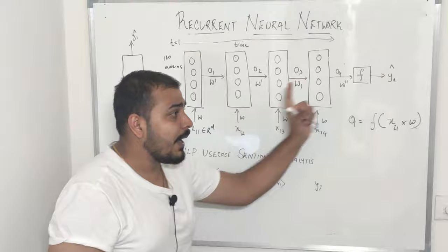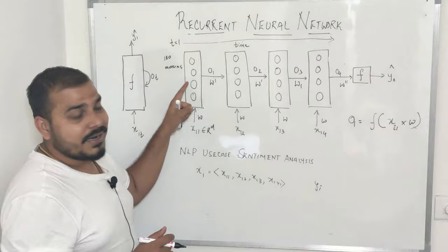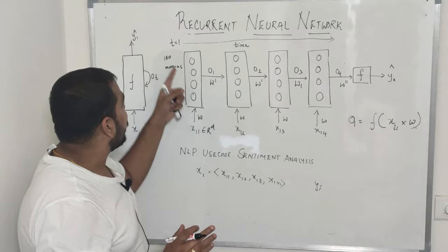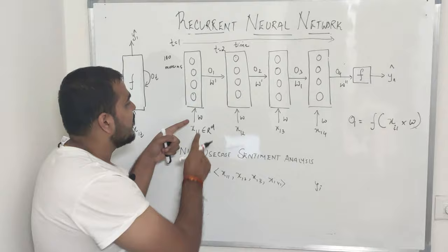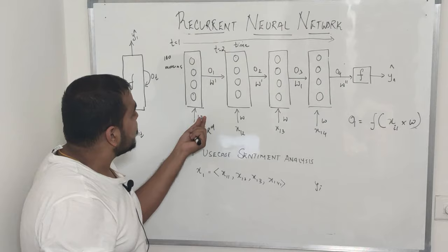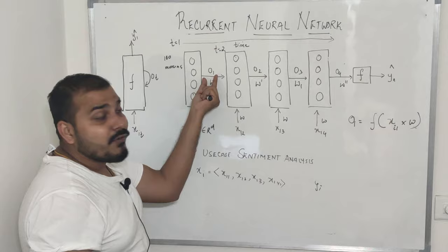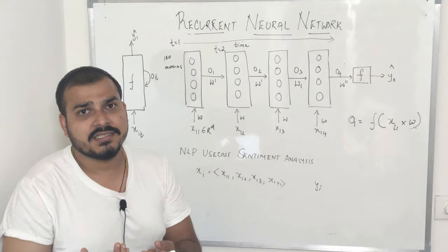Now once this output one is computed, go back to this architecture. This output one has to be given to the same hidden neuron. So this hidden neuron again will come, and the same 100 hidden neurons will be there. But at time T equal to 2, my next word X12 will get passed. The same weights will get assigned — remember, weights get updated only in back propagation, not in forward propagation. My new input will be X12, but I also have output O1 going to the neuron, and when I'm passing this output I'll assign some different weight W'.